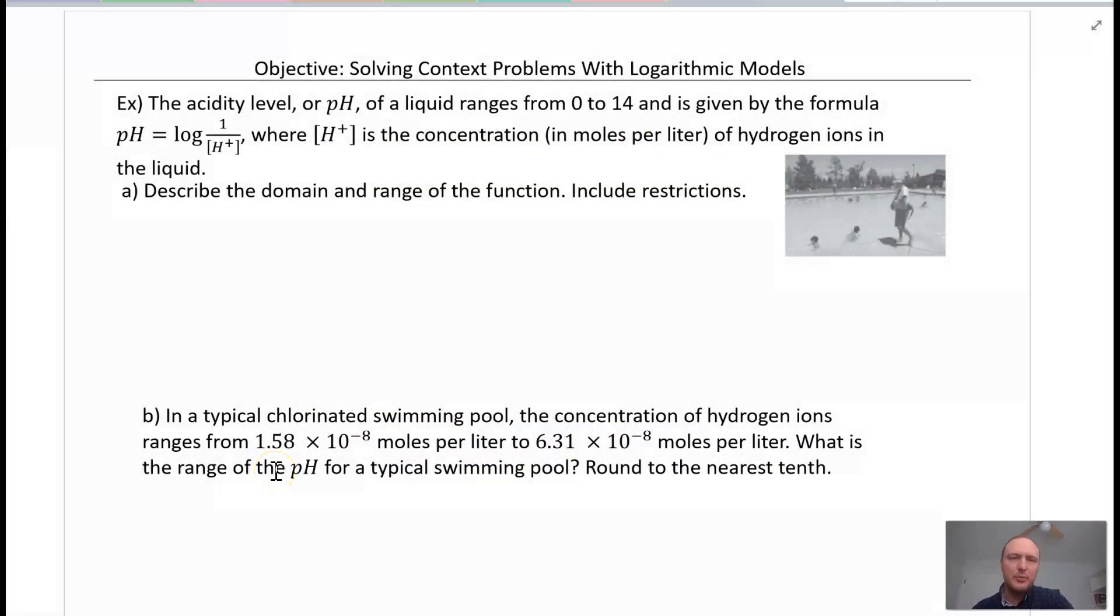The acidity level, or pH, of a liquid ranges from 0 to 14 and is given by the formula pH equals log of 1 over H+, where H+ is the concentration in moles per liter of hydrogen ions in the liquid. Describe the domain and the range of the function including restrictions. So let's highlight our function here. pH equals log of 1 over H+, and we need to identify the domain. What's our input? What are we plugging values in?